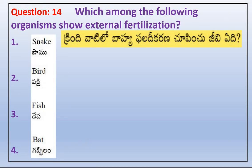Which among the following organisms shows external fertilization? Identify the organisms showing external fertilization. The correct answer is fish.